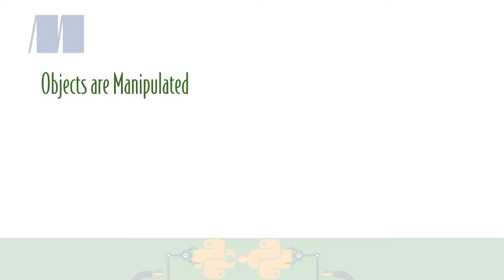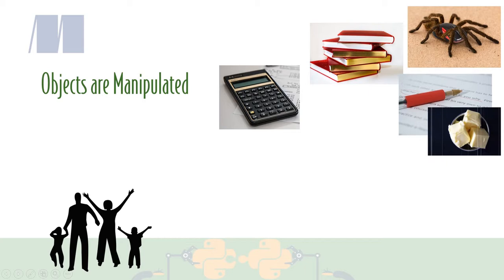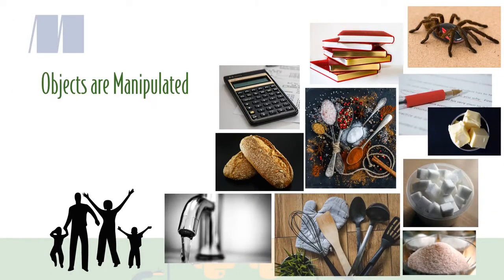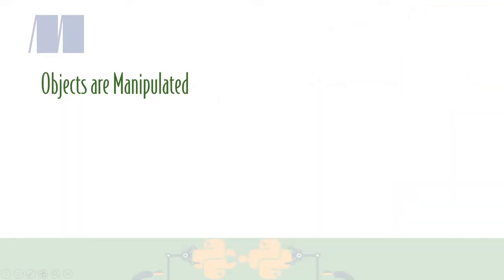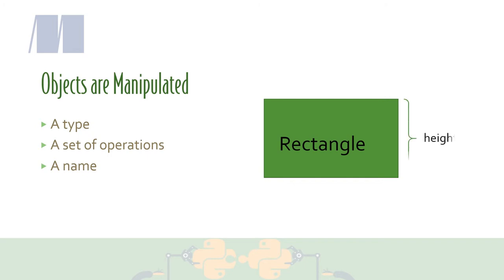Objects are things that can be manipulated. In Python, every separate thing is an object. Everything that you can create in Python has the following: a type, a set of operations, and a name. The type of the object tells you what data or properties are associated with it.